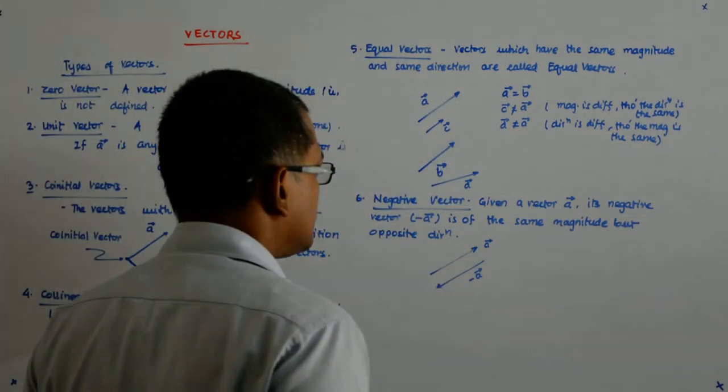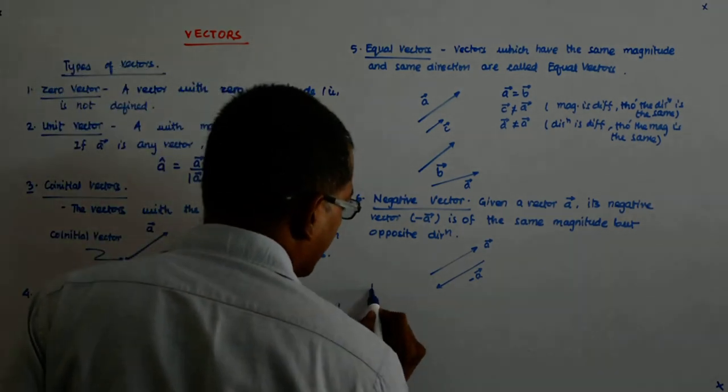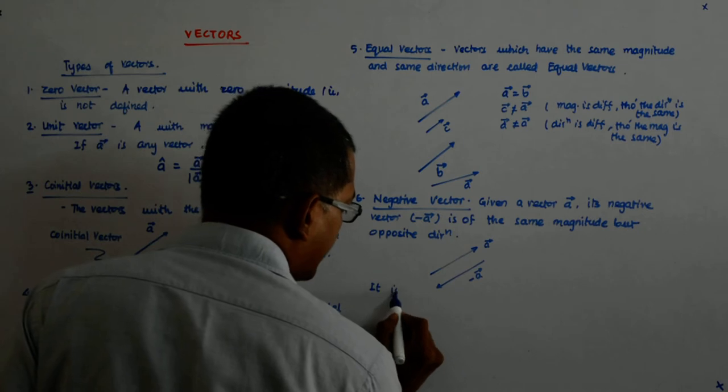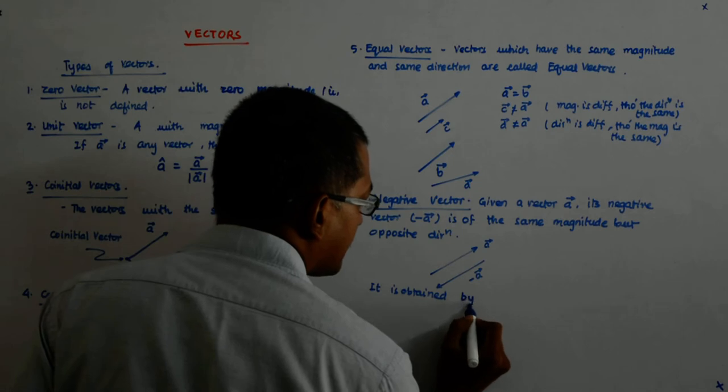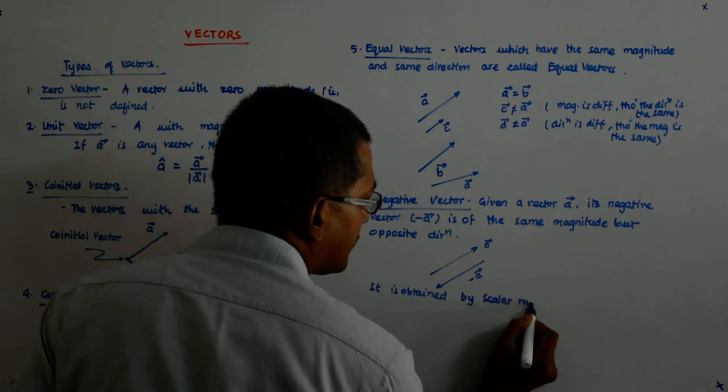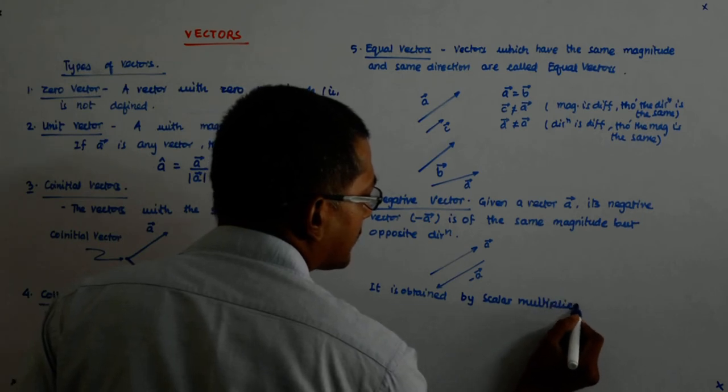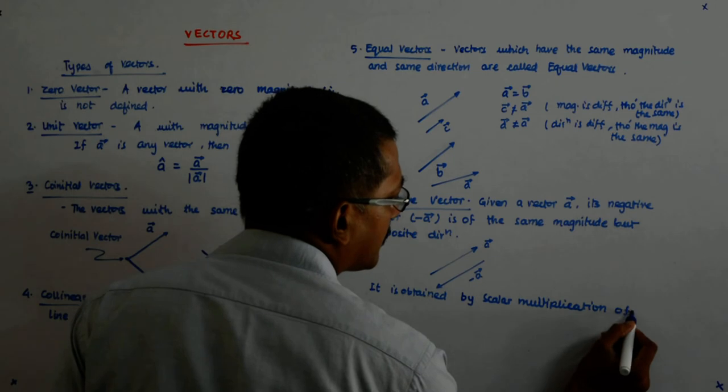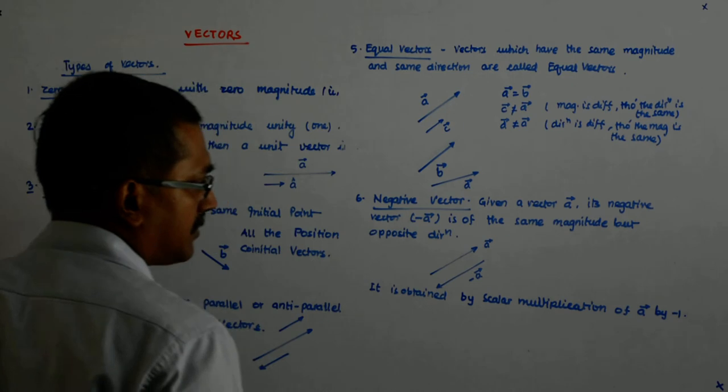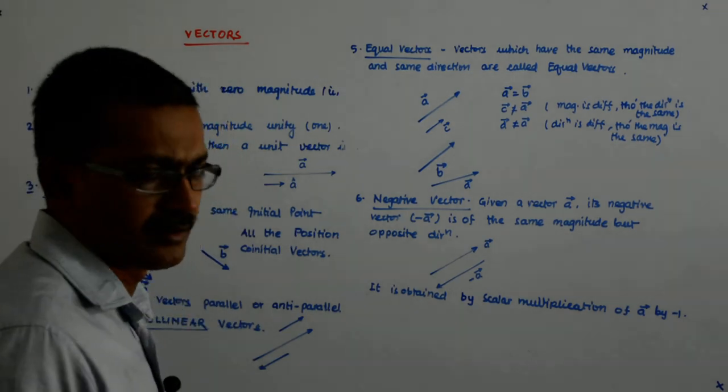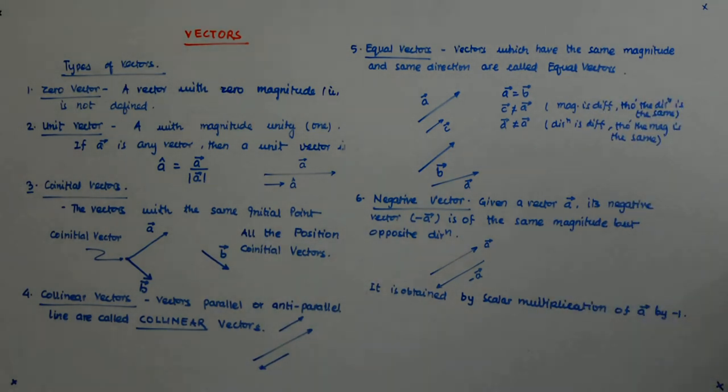So, same magnitude opposite direction becomes negative. Now, the negative is obtained, it is obtained by scalar multiplication, scalar multiplication of A by minus 1, scalar multiplication of A by minus 1.